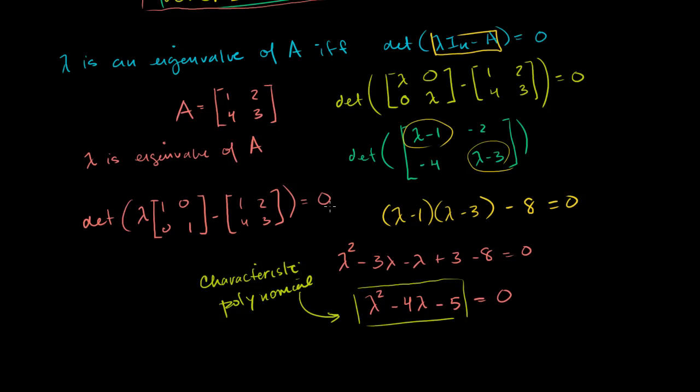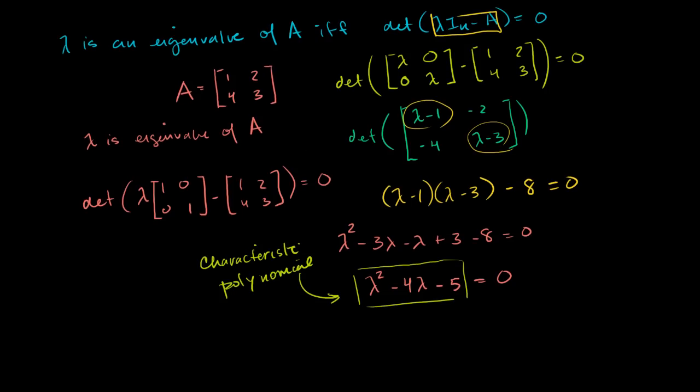But if we want to find the eigenvalues for A, we just have to solve this right here. This is just a basic quadratic problem. And this is actually factorable. Let's see, two numbers and you take the product as minus 5, and when you add them, you get minus 4. It's minus 5 and plus 1. So you get lambda minus 5 times lambda plus 1 is equal to 0.